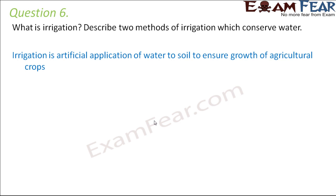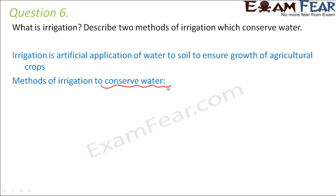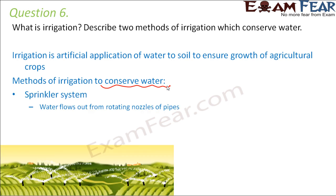Even if there is no rain, we can artificially apply water to the soil. There are many different ways to do this. Here we will mention two methods that help conserve water — these are the modern methods of irrigation introduced to save water, because traditional methods like manually pouring water from wells and scattering it across the field involved a lot of water wastage.